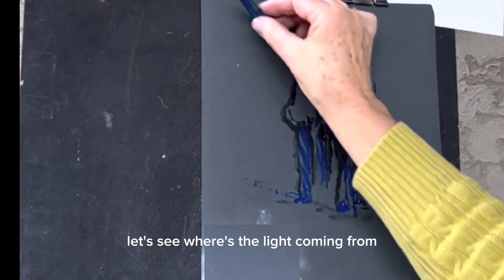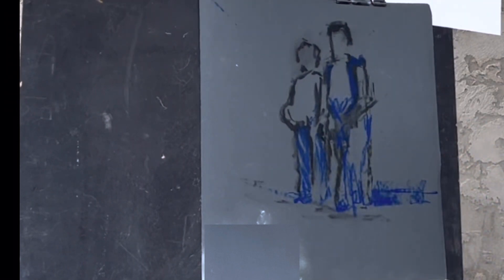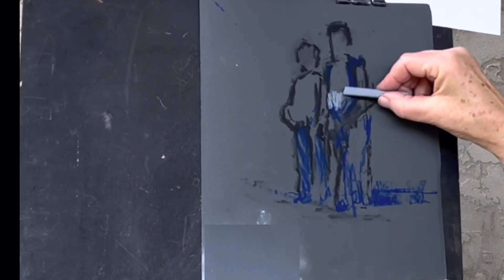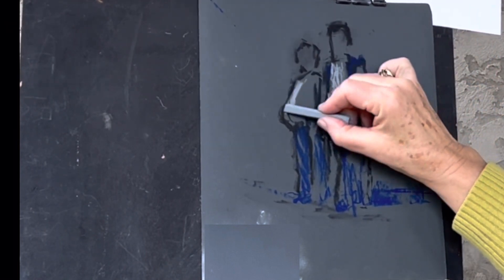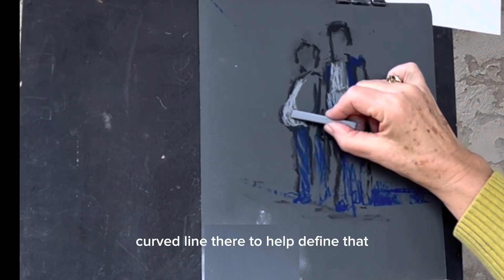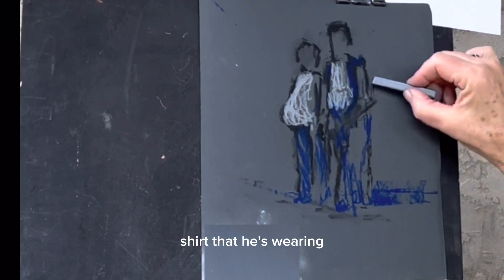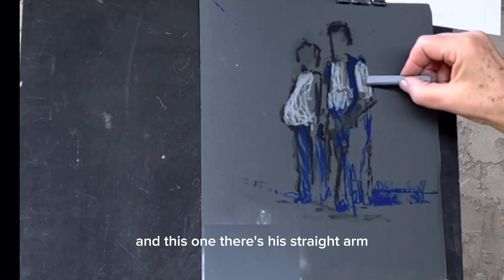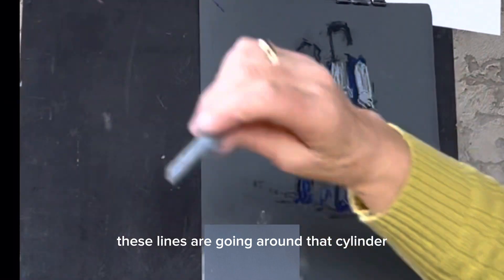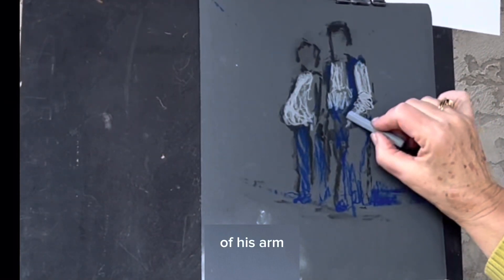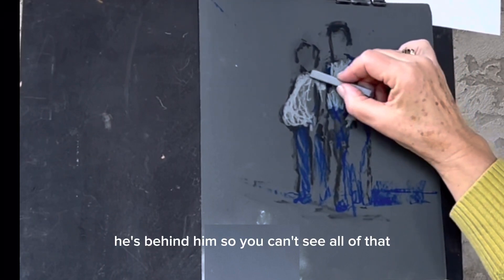Let's see, where's the light coming from? I am going to have the light coming from this direction, so there'll be shadows behind them. I want a nice kind of curved line there to help define that shirt that he's wearing. And this one, there's his straight arm, I'm going to use arm. These lines are going around that cylinder of his arm. He's behind him, so you can't see all of that.